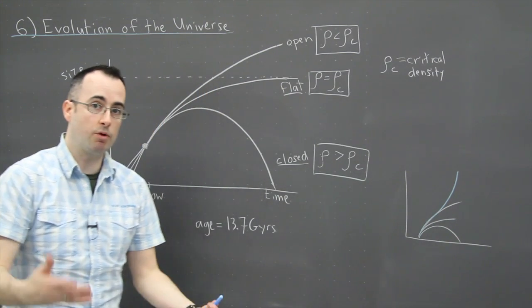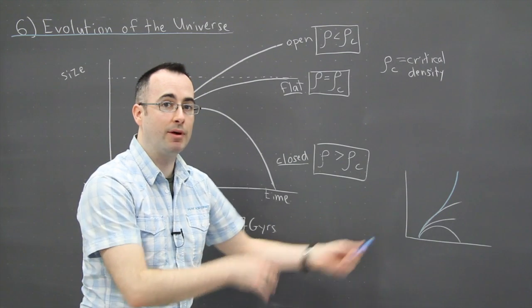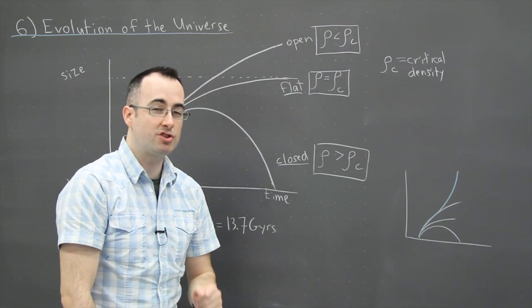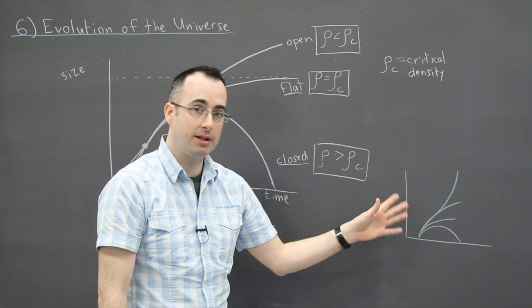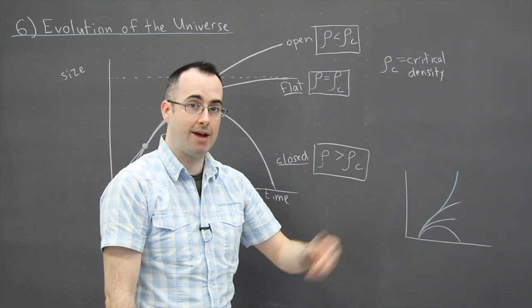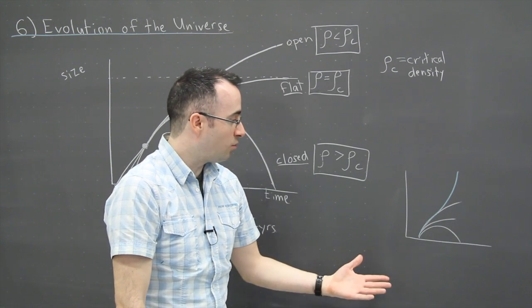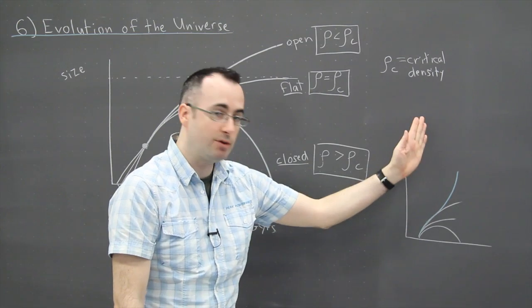So what that would mean then or what that would represent is that gravity was still winning at some point. But what's really important and so cool is that these guys figured out that at some time a few billion years ago it seems like something else took over and has been winning ever since. And that thing that's been winning is making the universe expand at an expanding and increasing rate.